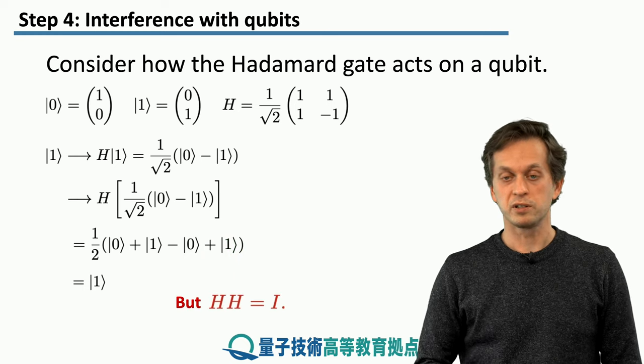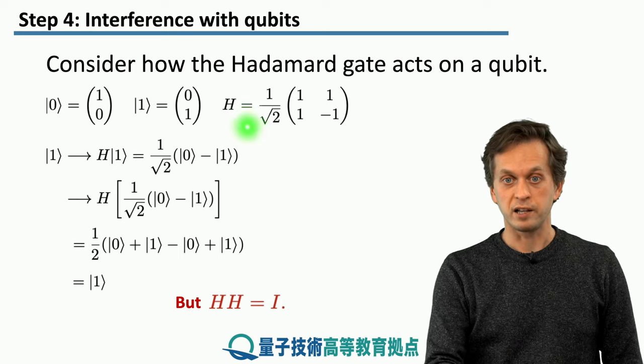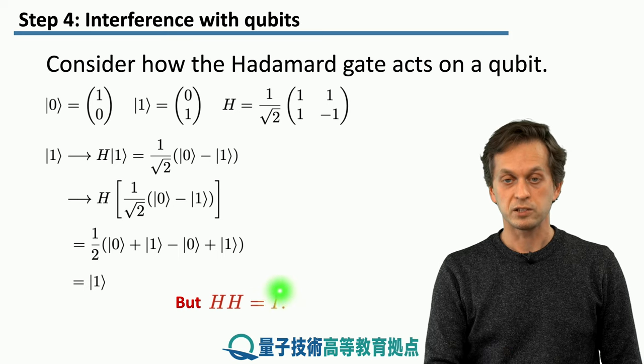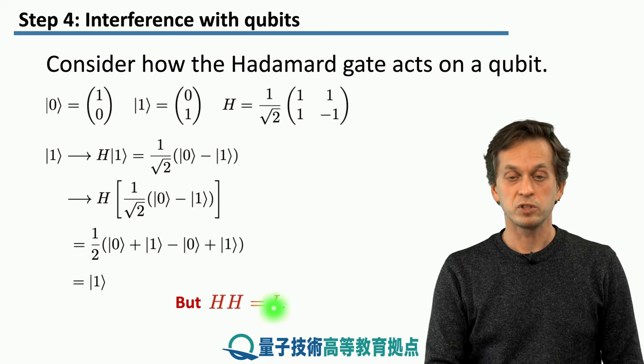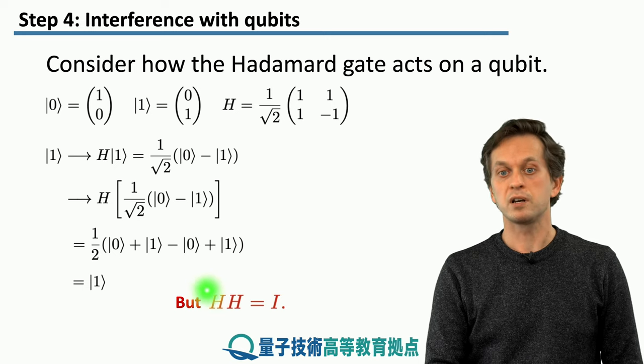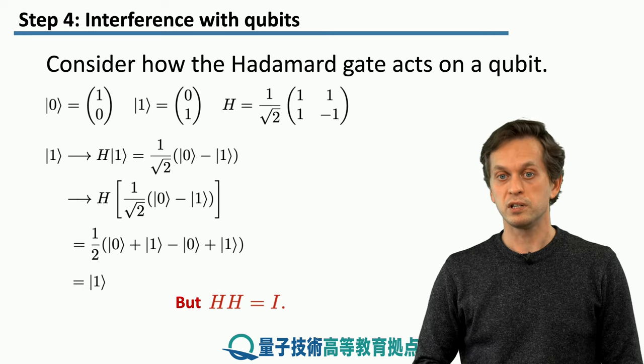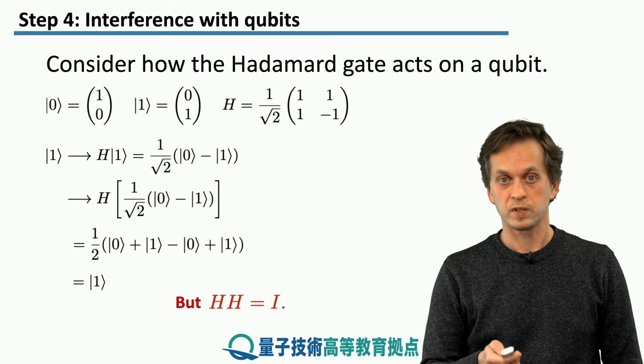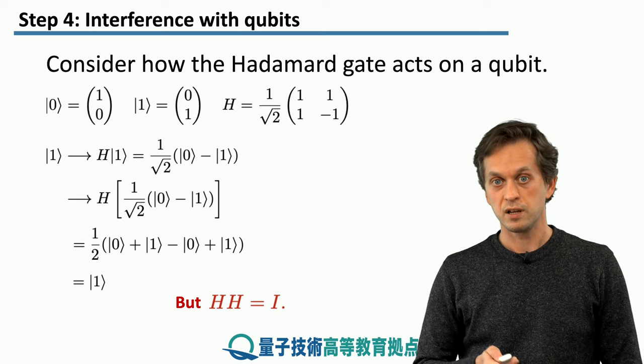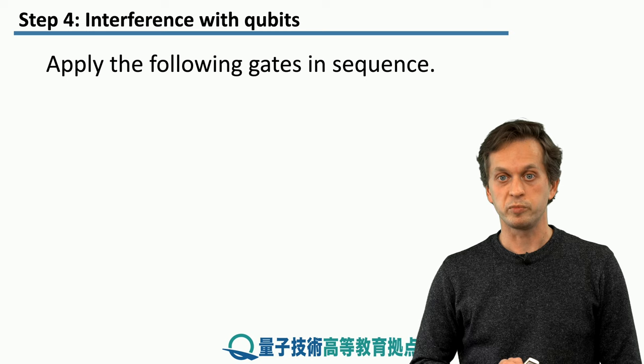So this may not surprise you too much. After all, applying Hadamard twice actually applies the identity, which is doing nothing. That's because the Hadamard gate is its own inverse. So, let's consider different transformations that do not have this property.